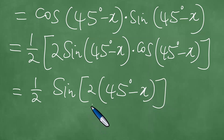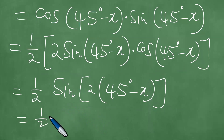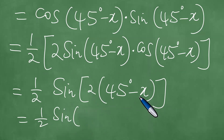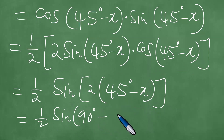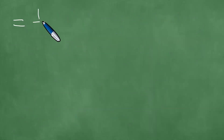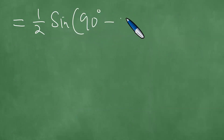Using what we call the trigonometric double angle formulae, we apply the distributive law because multiplication distributes over subtraction. 2 times 45 degrees is exactly 90 degrees minus double x. So this is one half of the trigonometric sine of 90 degrees minus 2x.